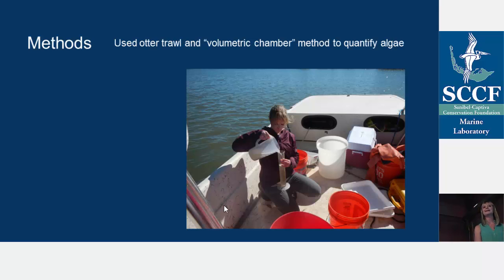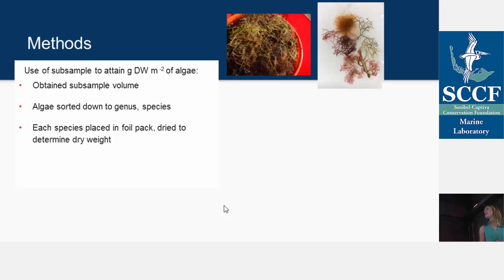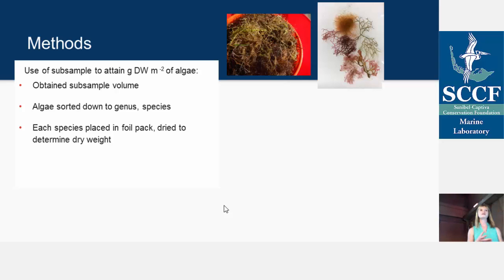To standardize our samples across all different sites, we took a subsample to attain a gram dry weight per meter squared of algae. This allows us to compare our results to other studies. We obtained a subsample from each trawl — one trawl per site. We would then measure that subsample volume back in the lab, sort the algae down to genus and species — which isn't always easy, sometimes requiring cross-sectioning or measuring under a microscope. Each species was placed in a foil pack, measured, then dried, and we determined the dry weight.